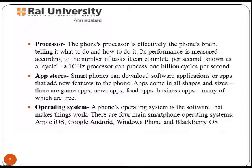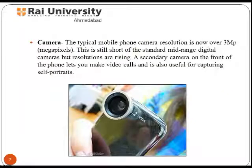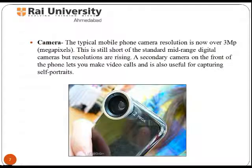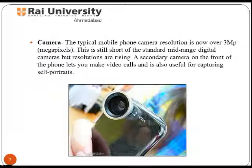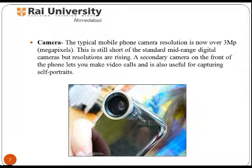The operating system is the software that makes things work in your phone. The camera in a mobile phone captures images instantly anywhere, which reduces handling issues. With new advancements in technology, camera pixel quality is getting better day by day. You can find two cameras in a mobile phone — one on the back side and another on the front side.